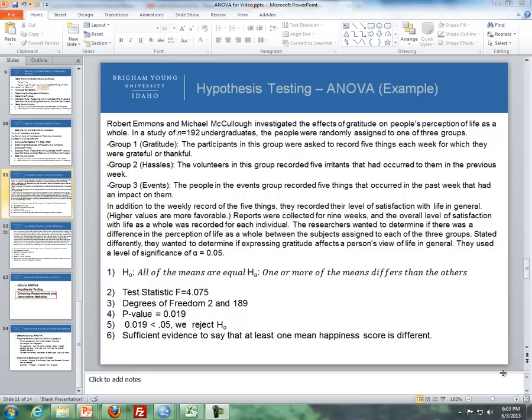Hello, this is Brother Kermar from the math department. This is a continuation of a lesson dealing with inference for several means in ANOVA. Where we last left off, I went through the problem dealing with a study done by Emmons and McCulloch comparing three different groups: the gratitude group, the hassles group, and the events group.